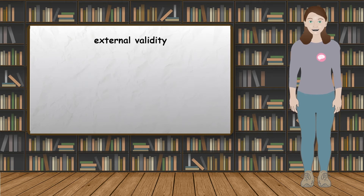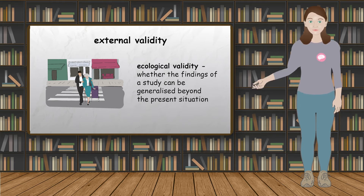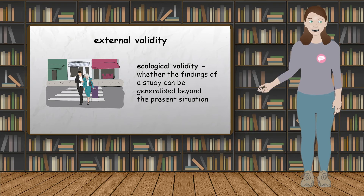Ecological validity is a type of external validity, which refers to the extent to which the findings of a study can be generalized beyond the present situation — for example, whether the behavior displayed in a laboratory setting applies to everyday life.